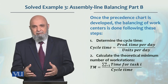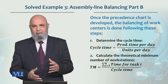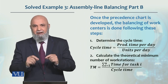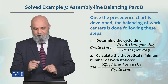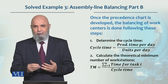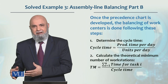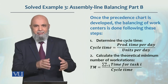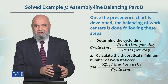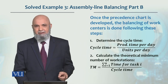Otherwise آپ وہ production rate achieve نہیں کریں گے جس کی requirement ہے۔ دوسری چیز ہے theoretical minimum number of work stations۔ جتنے بھی tasks ہیں — جیسے ہماری example میں a to i tasks تھے — ان کا total time 66 minutes بنتا ہے۔ یہ 66 minutes divided by the cycle time (جو ہم نے پہلی equation سے determine کیا ہے) سے theoretical minimum work stations آ جائیں گے۔ اگر theoretical minimum 5 ہو اور آپ 4 میں assign کر دیں تو calculation میں کوئی mistake ہے — کیونکہ theoretical minimum سے کم work stations نہیں ہو سکتے۔